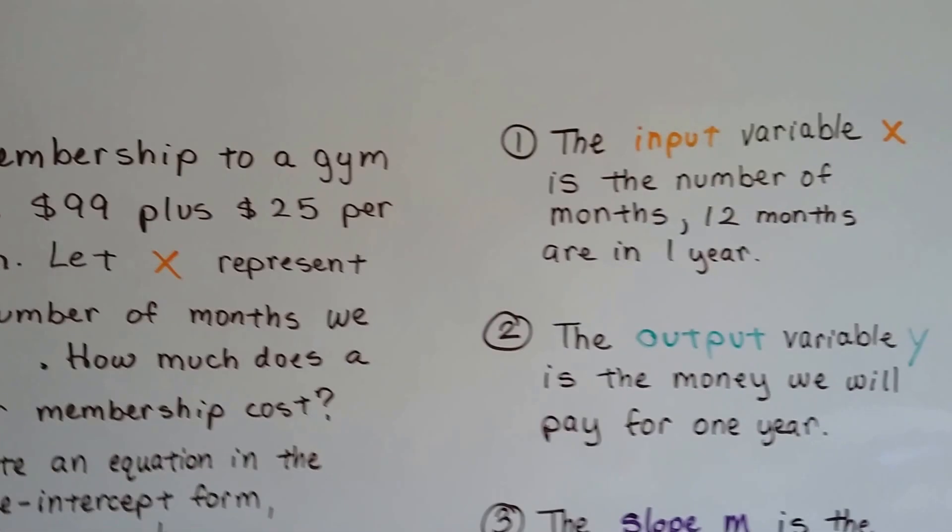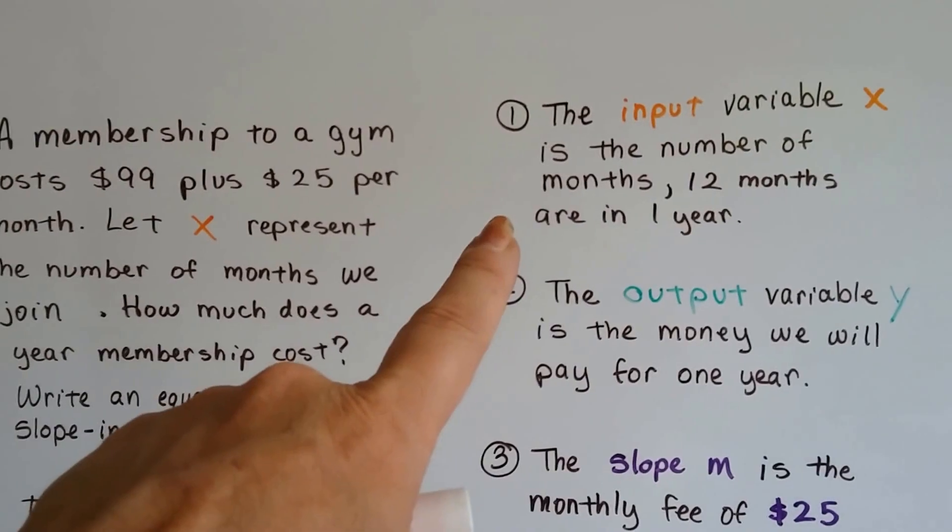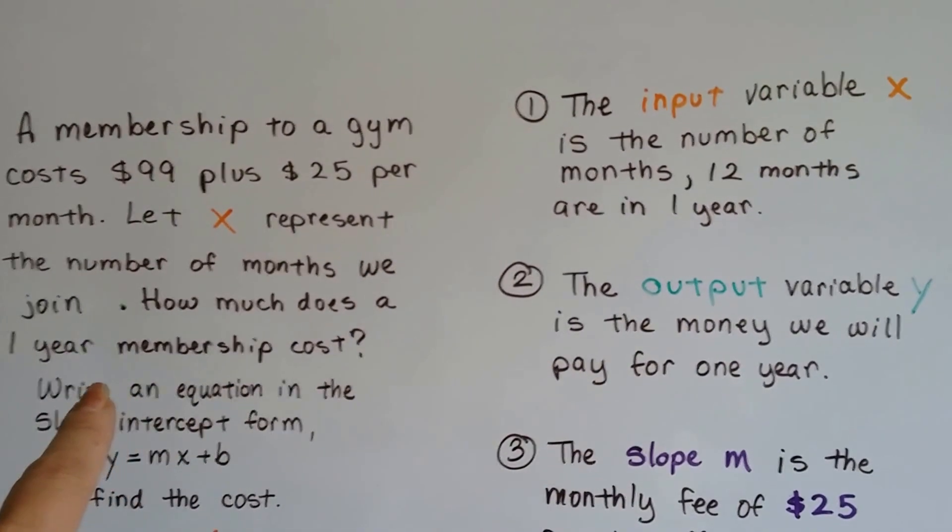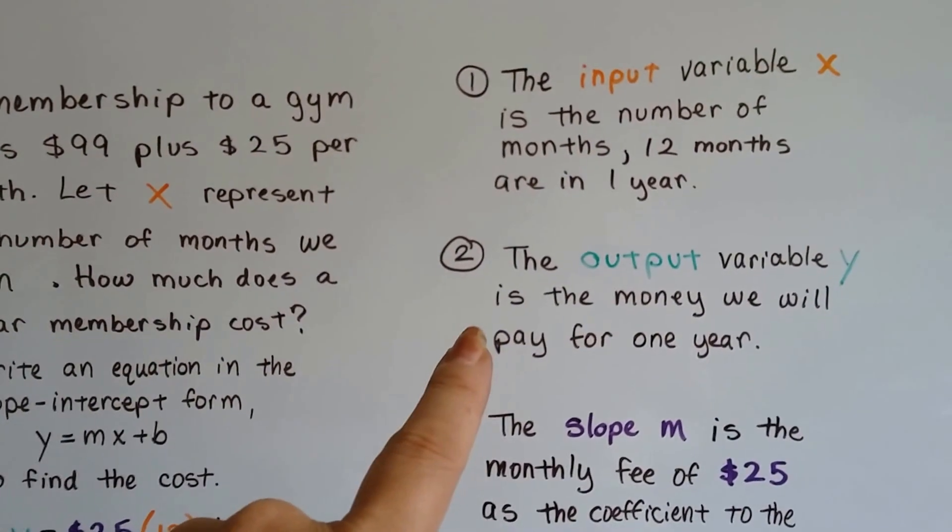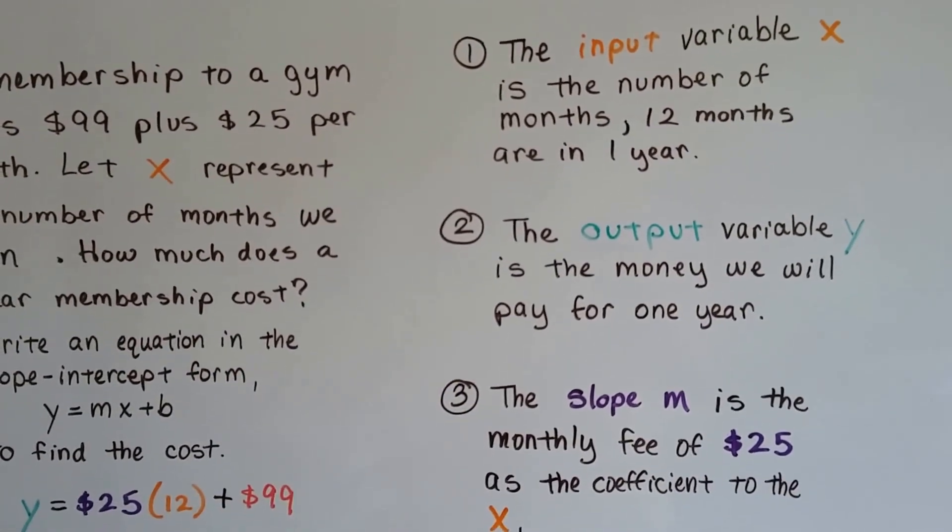The input variable x is the number of months. There are 12 months in a year. The output variable y is the money we'll pay for one year.